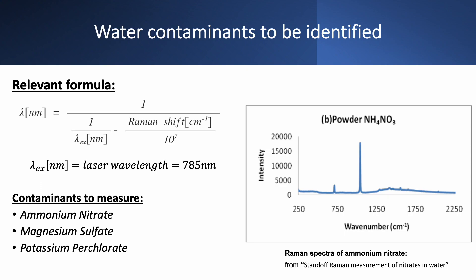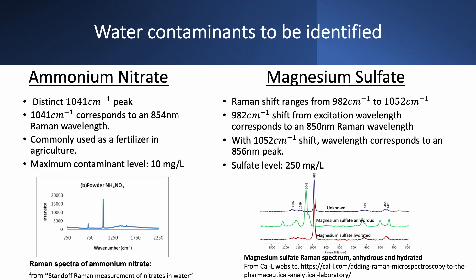The samples we intend to measure are magnesium sulfate, ammonium nitrate, and potassium perchlorate. Ammonium nitrate is commonly used as a fertilizer in agriculture. In Raman spectroscopy, it has a distinct 1041 inverse centimeter peak. When using a 785 nanometer laser, this corresponds to a 854 nanometer Raman wavelength.